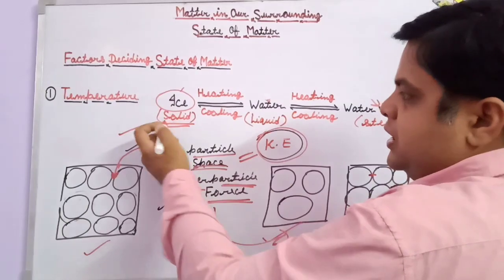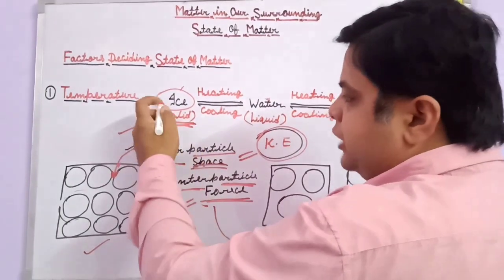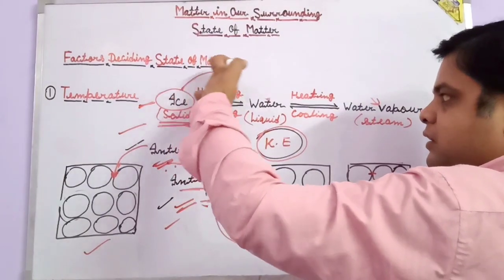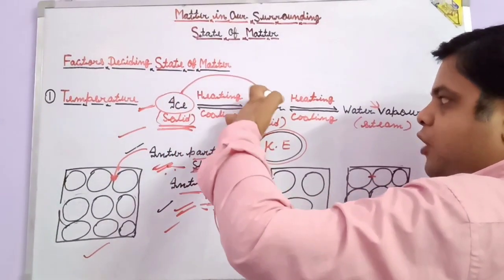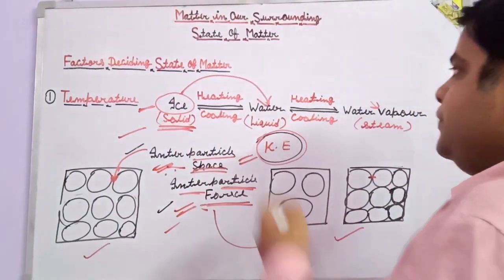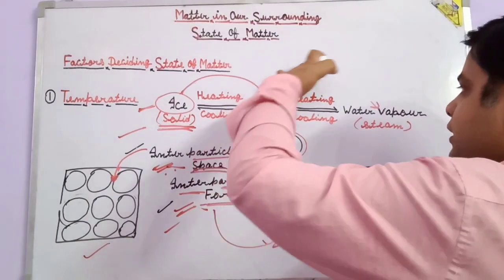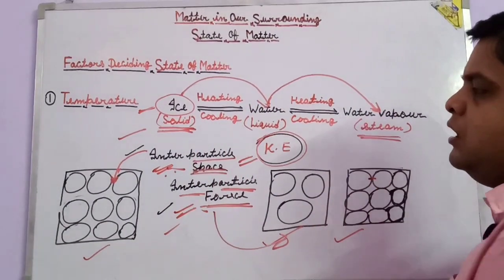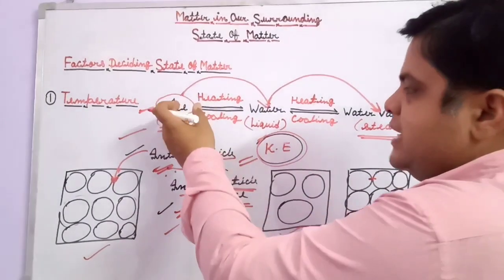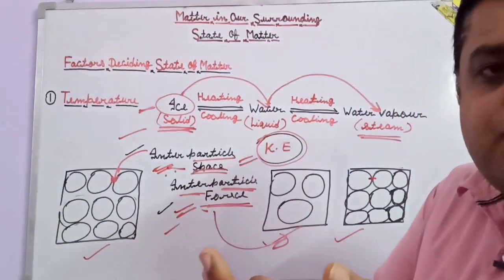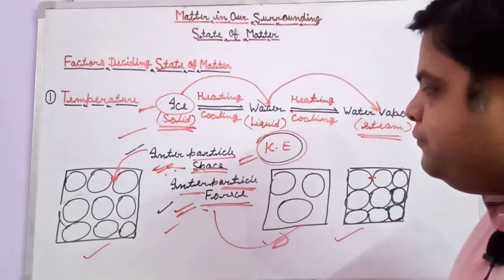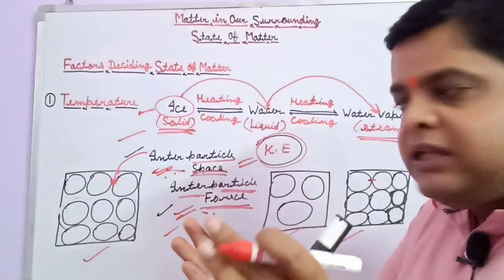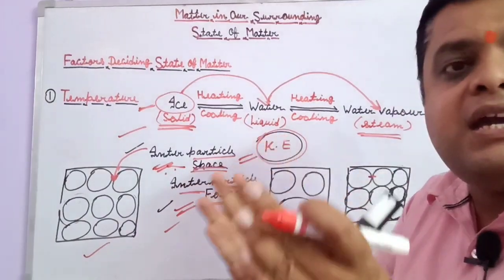When water is in a cool condition, it forms a solid state — ice. When that ice is heated, it forms water in the liquid condition. When water is heated further, it forms water vapor in the steam condition. After heating the ice, the kinetic energy of the molecules increases and the inter-particle force breaks. When the inter-particle force breaks, the inter-particle space increases.